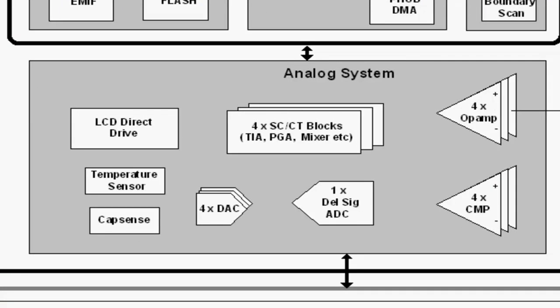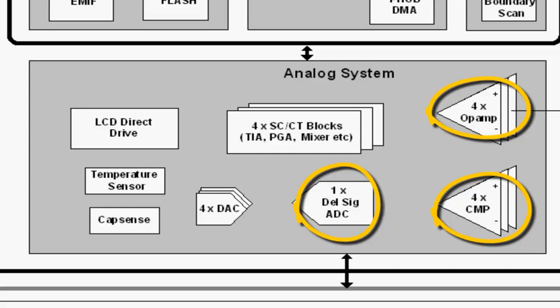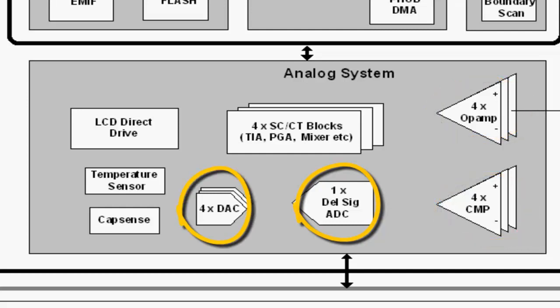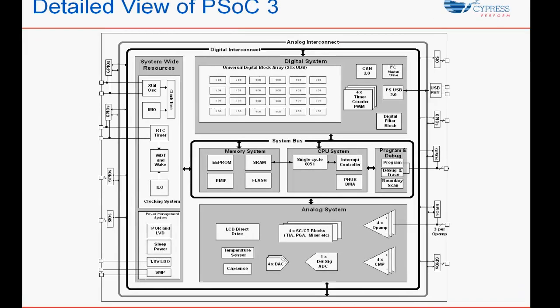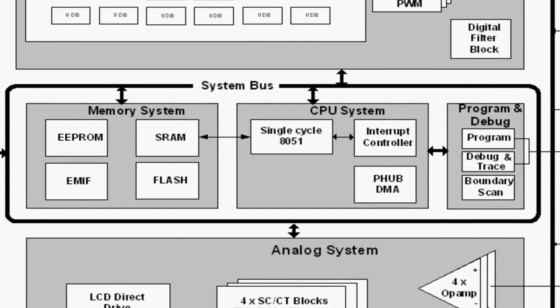Panning over to the analog subsystem is a pretty diverse block. As you can see, it has a wealth of features like op-amps, comparators, and an ADC, as well as DACs. It also has the SCCT blocks — switch cap continuous time blocks — which is a unique set of programmable analog where you can make a programmable gain amplifier or mixer, or other diverse analog components. In the center is a subsystem probably the most familiar to those of you who are MCU users. There is a high-performance single clock cycle per instruction 8051 CPU, with a complement of flash, SRAM, and EEPROM for general embedded processing.